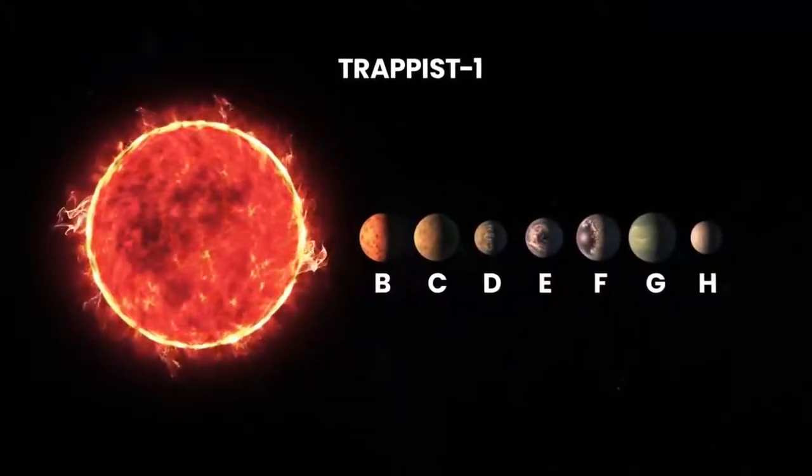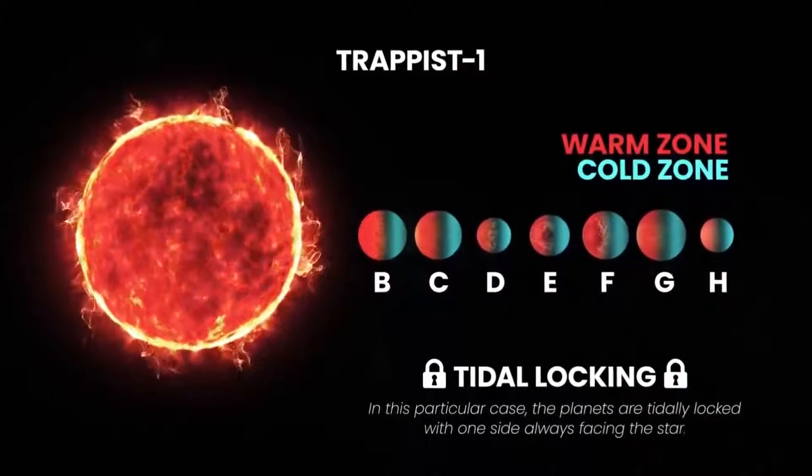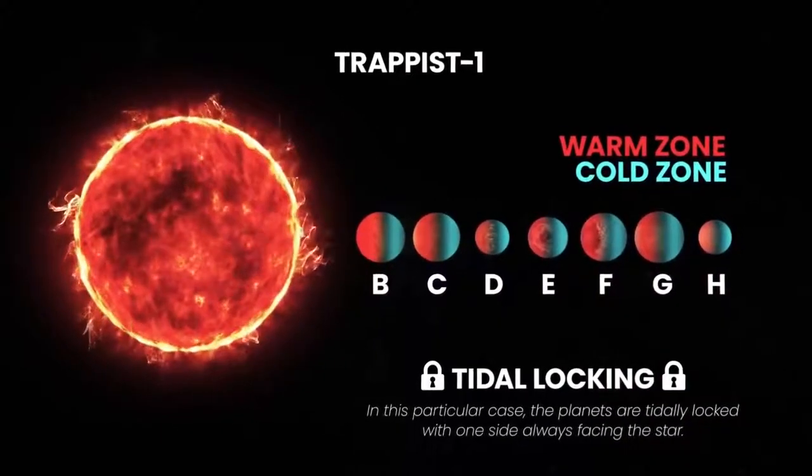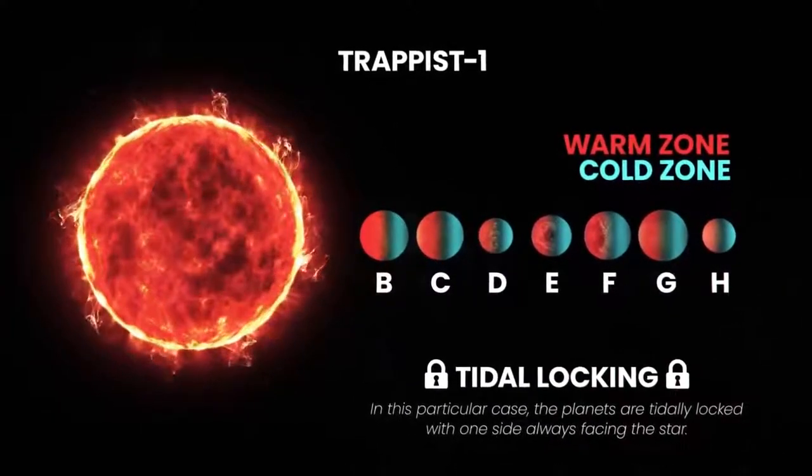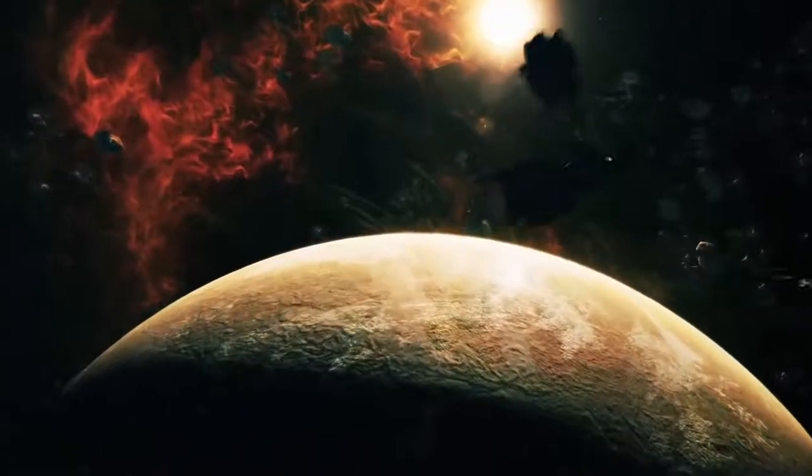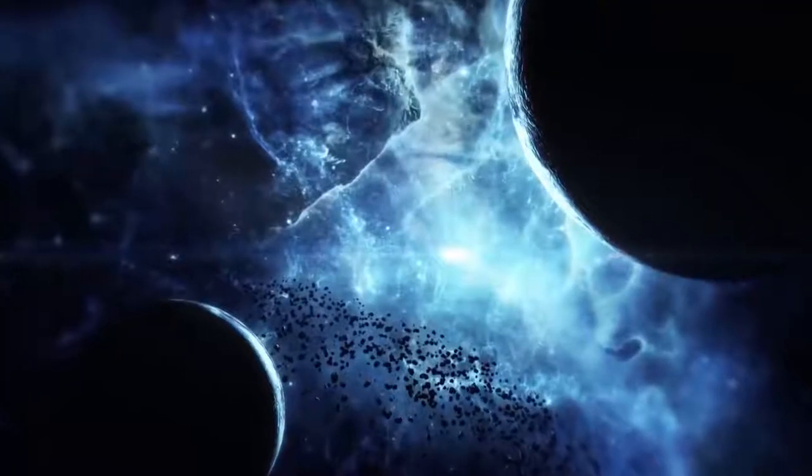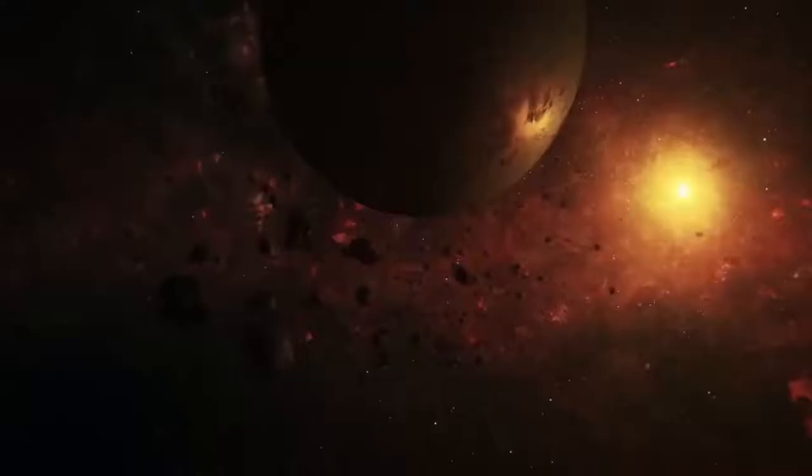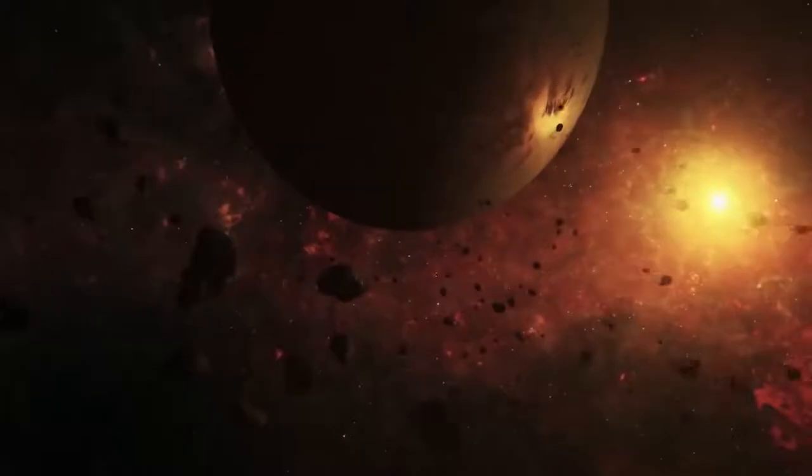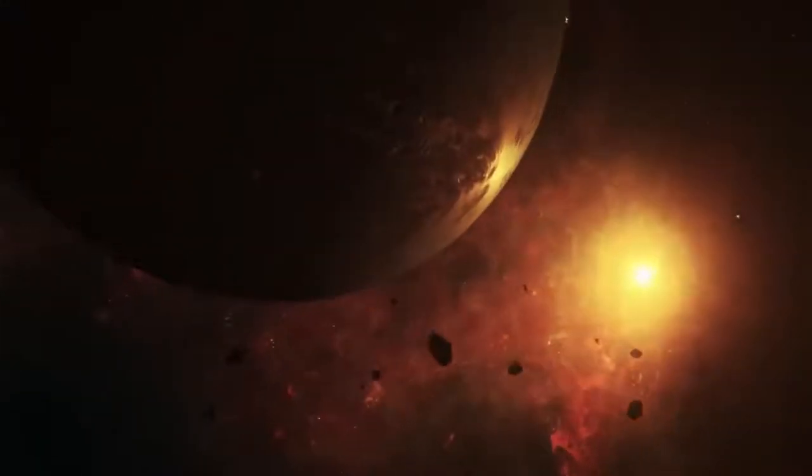The Trappist-1 planets are all likely tidally locked, meaning that any of these planets could have a zone that is warm enough for life and does not get bombarded from radiation from their host star. Even though right now there is a lot of unanswered questions about the Trappist-1 system, it is the most thoroughly known planetary system apart from our own. But soon, we might find out that one of these super-Earth exoplanets does have liquid water and life.